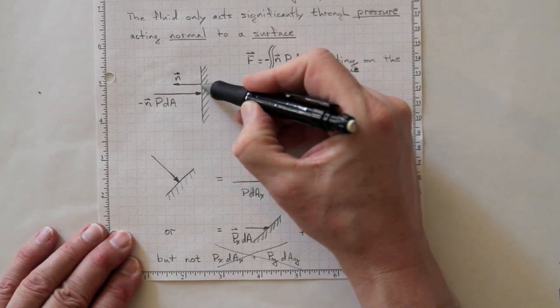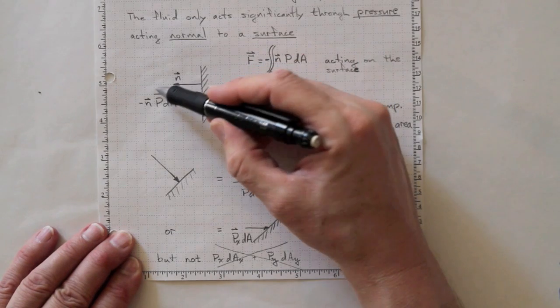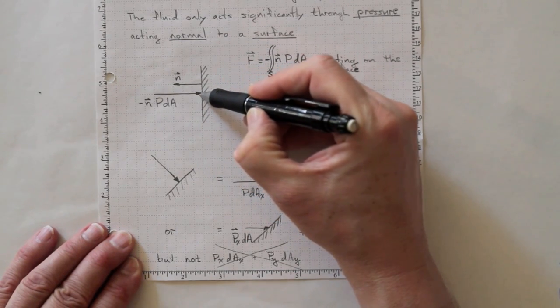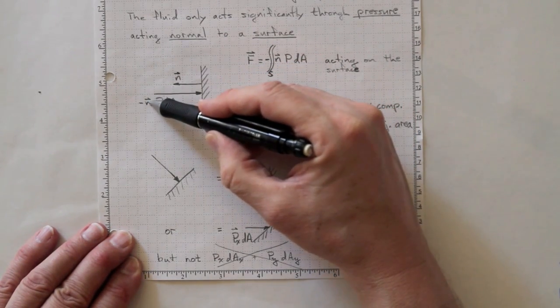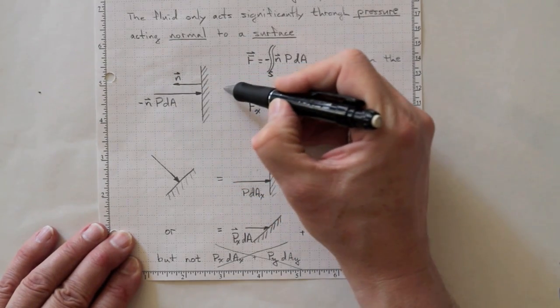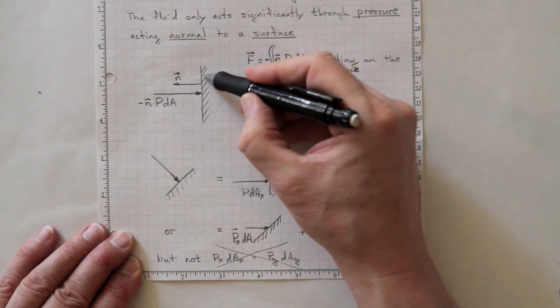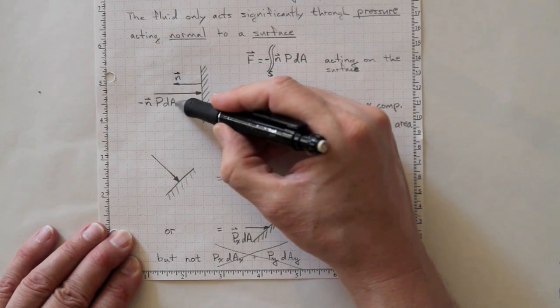So if we've got a surface here and we draw a unit normal vector pointing outwards, then the force acting on that surface is that unit normal vector negative sign, to indicate that it's acting in the opposite direction, times the pressure times the incremental area dA.